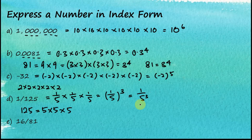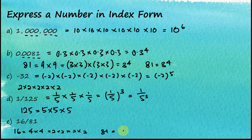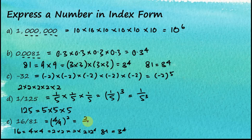Example E: 16 over 81. We can tell that 16 equals 4 times 4, or 2 times 2 times 2 times 2, and 81 equals 9 times 9 equals 3 to the power of 4. So 16 over 81 can be written as (4/9) squared or as (2/3) to the power of 4. This is how we write numbers in index form.